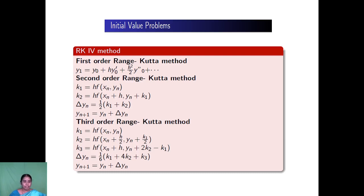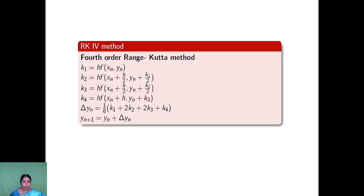Next, the third order Runge-Kutta method: k1 is equal to h times f of xn, yn, and k2 is equal to h into f of xk. In third order, we calculate k1, k2, k3 and find delta yn as 1 by 6 of k1 plus 4 times k2 plus k3, then yn plus 1 is equal to yn plus delta yn. For the fourth order Runge-Kutta method, we calculate k1, k2, k3 and k4. Delta yn is 1 by 6 times k1 plus 2 into k2 plus 2 into k3 plus k4, and yn plus 1 is equal to yn plus delta yn.